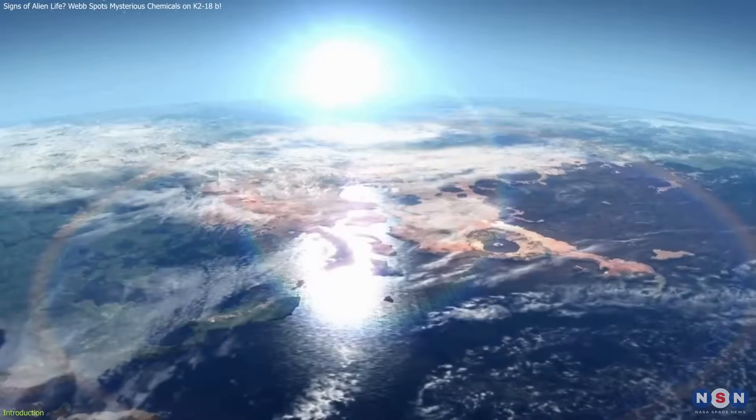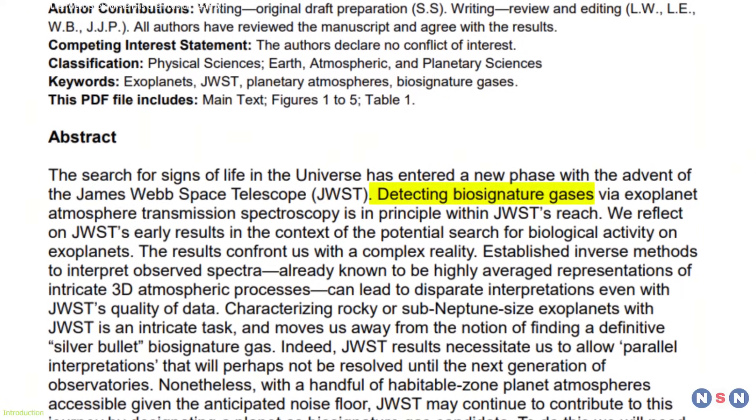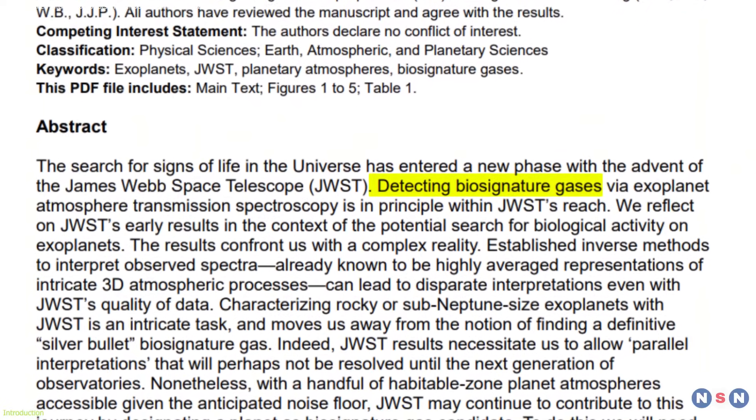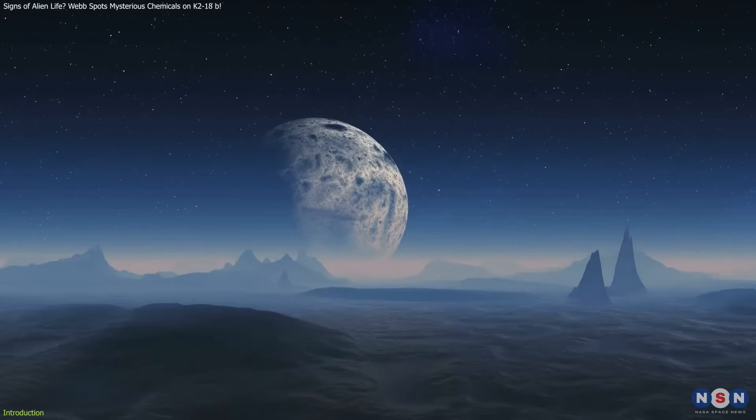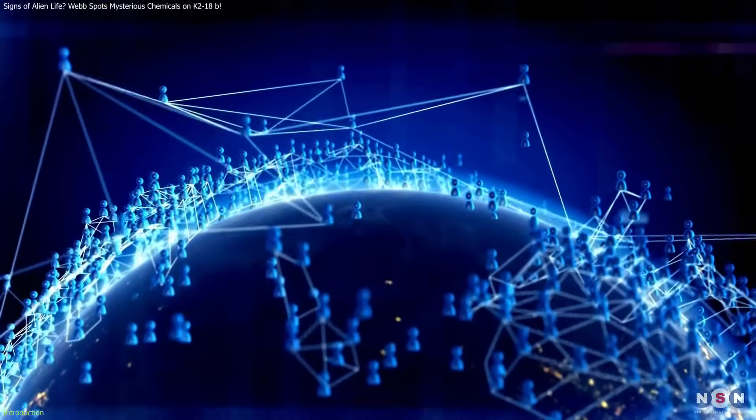Two compounds typically found on Earth in connection with life, dimethyl sulfide and dimethyl disulfide, were detected. While not definitive proof of alien life, the finding has ignited global scientific curiosity.